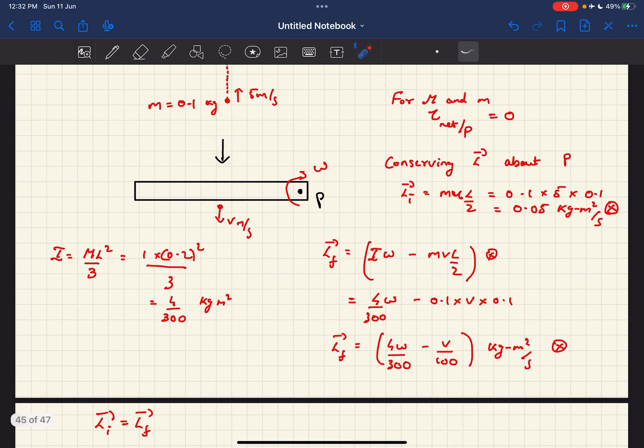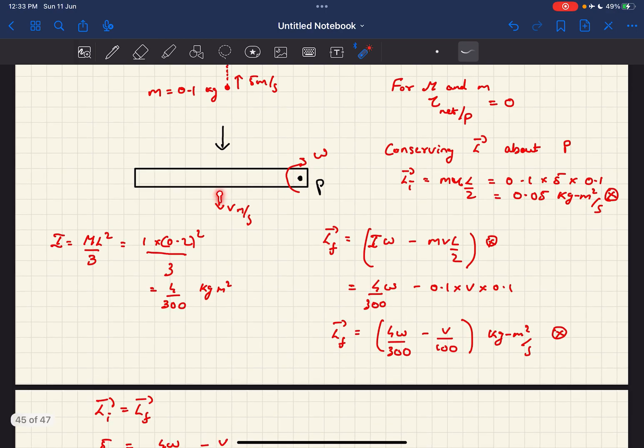So now because of this rod, we can say the angular momentum contribution would be I omega, where I is the moment of inertia of this rod about the point P. And the contribution because of this smaller mass would be simply m v l by 2, but right now in the opposite direction.